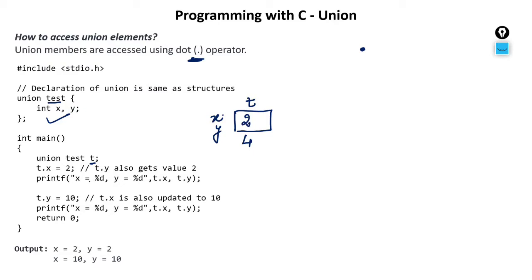Now, t dot y also gets the value 2 because both x and y are sharing the same memory location. If what is inside x is 2, then definitely y also has 2 because they both share the same location. If you try to print the value of x and y using dot operator — t dot x and t dot y — you will get 2 for both.